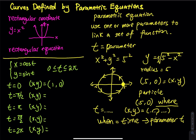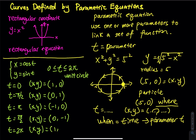When t equals π/2: cosine(π/2) equals 0 and sine(π/2) equals 1, giving point (0, 1). If you don't know why, you need to review the unit circle. When t equals π: x equals negative 1, y equals 0. When t equals 3π/2: x equals 0, y equals negative 1. When t equals 2π: cosine(2π) equals 1, sine(2π) equals 0. So we have five ordered pairs: (1,0), (0,1), (-1,0), (0,-1), and back to (1,0).